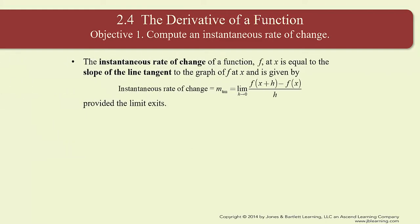To get us started, remember in section 2.3 we talked about the difference between an average rate of change and an instantaneous rate of change, and we looked at how we could approximate instantaneous rates of change. That approximation was laying the foundation for the following: the instantaneous rate of change of a function f at x equals the slope of the line tangent to the graph of f at x. It is given by the limit as h approaches 0, f of x plus h minus f of x all over h.